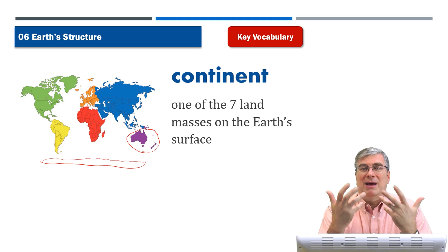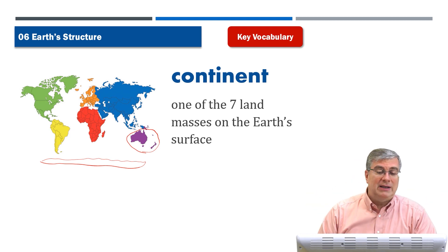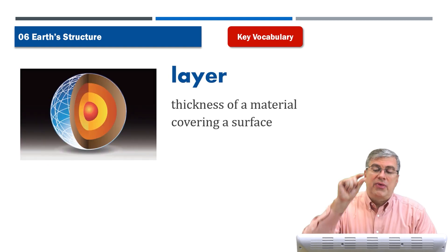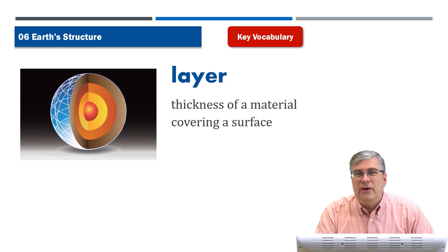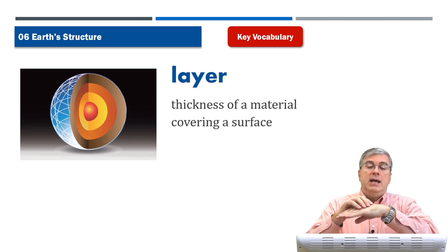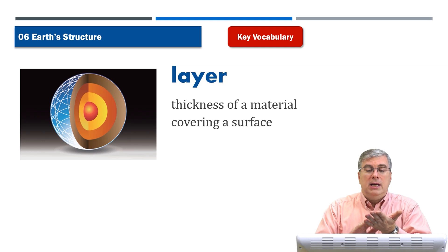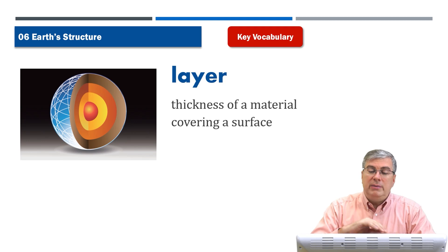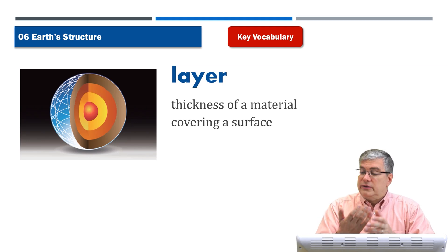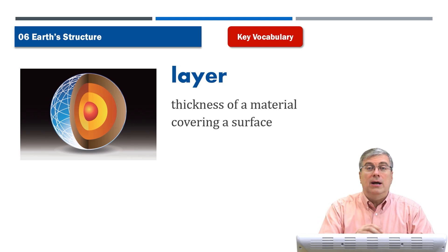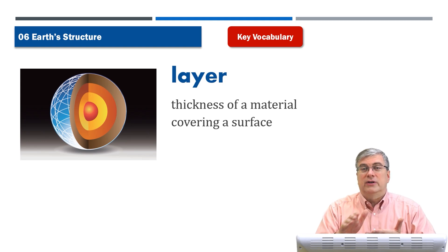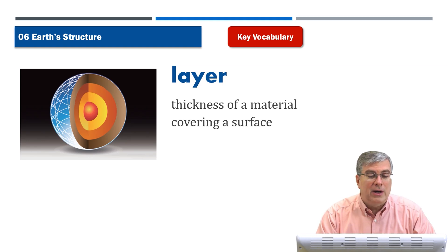Continents, of course, are landmasses — that's where people, animals, and plants live. Now, a layer is a thickness of a material covering a surface. Think about your hand: there is a layer of skin on your hand, and the skin covers the entire surface of your hand. So skin is a layer — it's a thickness of a material that covers a surface.